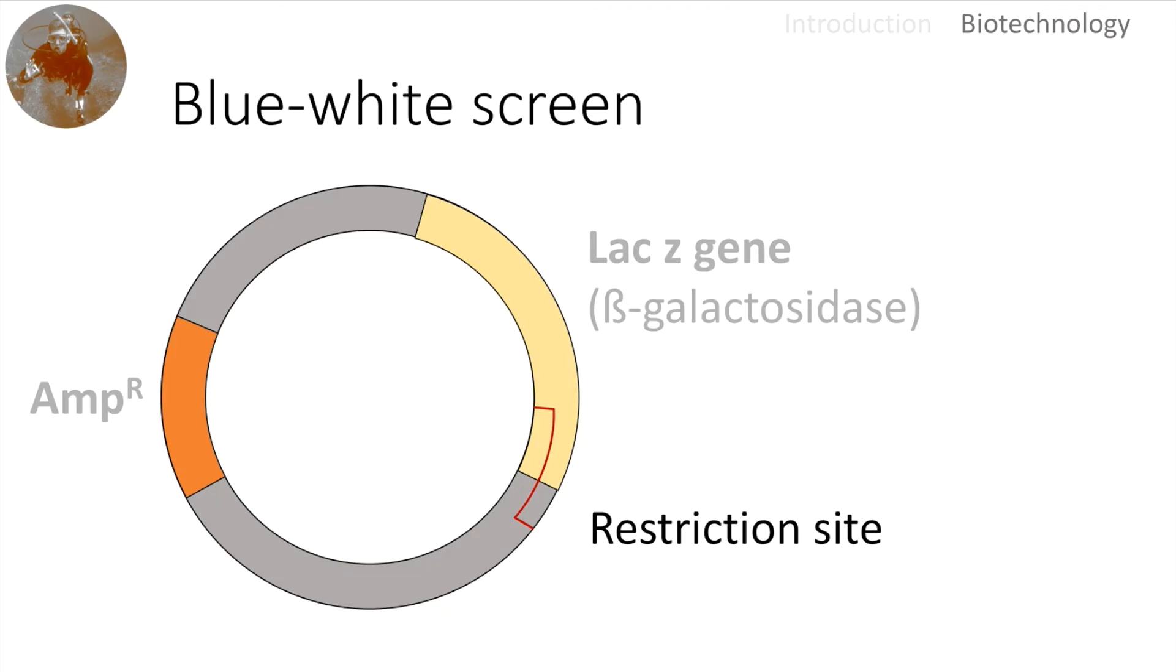In biotechnology we can use restriction enzymes to cut specifically at the restriction sites. Here you can see during the cut a part of the LAK-Z gene will go missing. The DNA insert is designed so that it can easily fit into the restriction site.